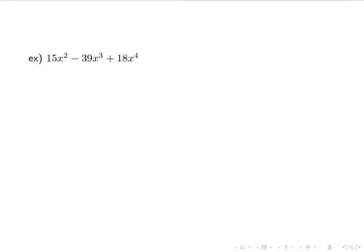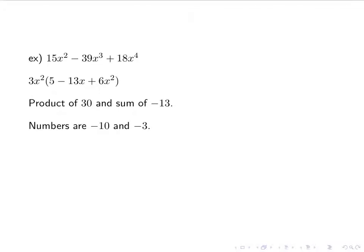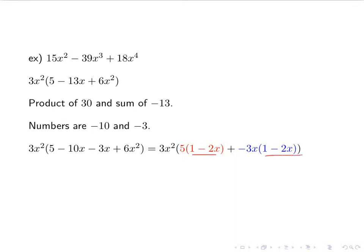For our last example: 15x squared minus 39x cubed plus 18x to the fourth. Again, recognize there is a GCF to pull out first — 3x squared — leaving 5 minus 13x plus 6x squared. We need two numbers whose product is 30 and sum is negative 13: that's negative 10 and negative 3. Splitting and factoring by grouping, pulling out 5 from the first two terms and negative 3x from the last two, gives the final answer: 3x squared times 1 minus 2x times 5 minus 3x.